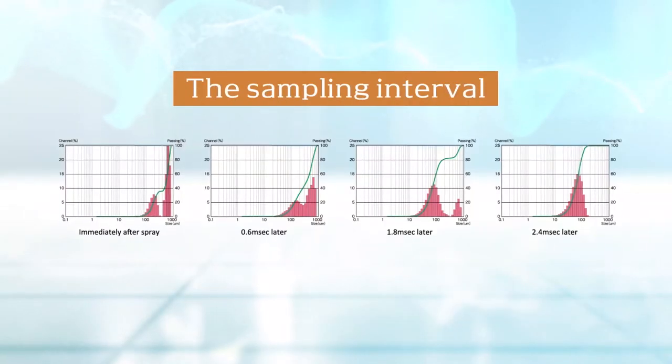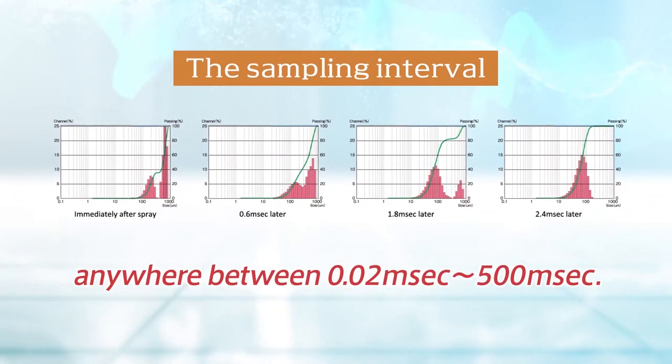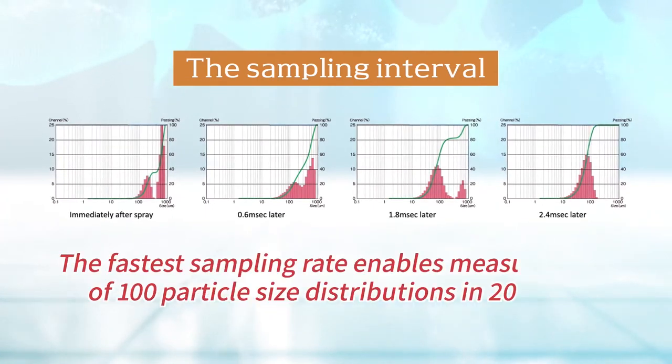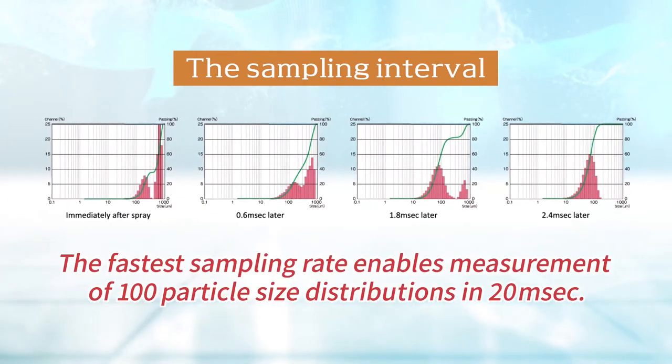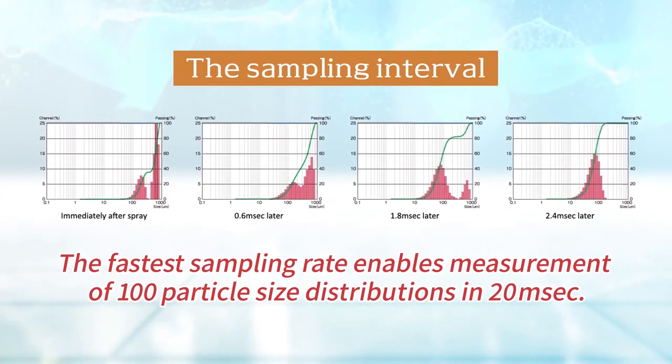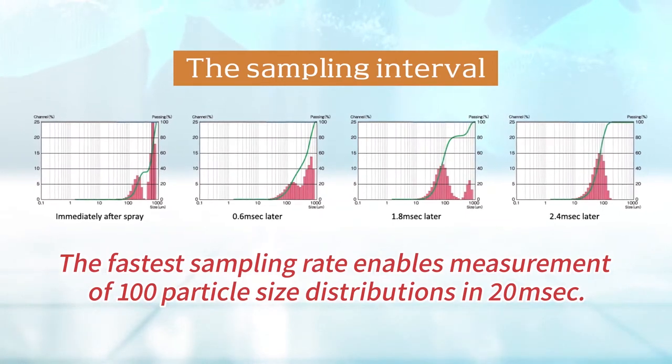The sampling interval for the scattered light can be set anywhere between 0.02 milliseconds to 500 milliseconds. The fastest sampling rate enables measurement of 100 particle size distributions in 20 milliseconds. As a result, changes to droplet particle size can be detected in a short period of time.